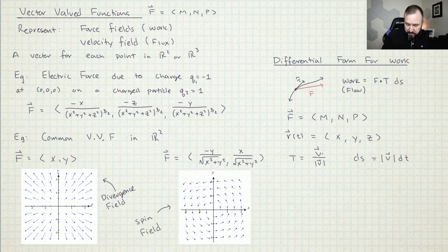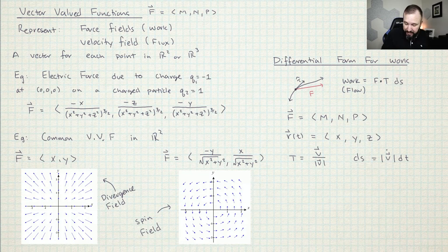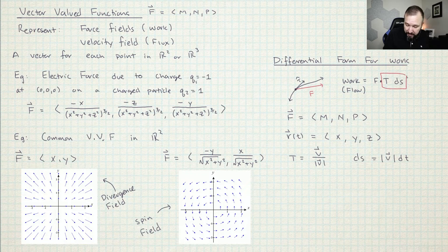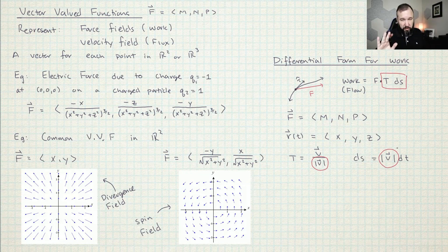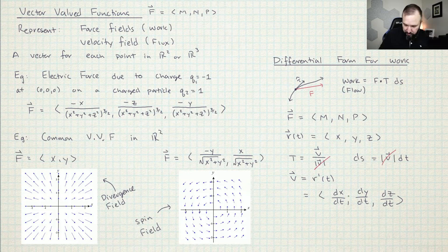T times DS — DS is just a little distance, so distance equals rate times time. The TDS is going to have magnitude of velocity in the denominator, and from the DS it's going to have magnitude of velocity in the numerator, so those cancel. V is R prime, so I take the derivative of all the parametric equations: DX/DT, DY/DT, DZ/DT. There's a DT in the numerator from DS and DTs in the denominator, so all of those things are going to cancel.